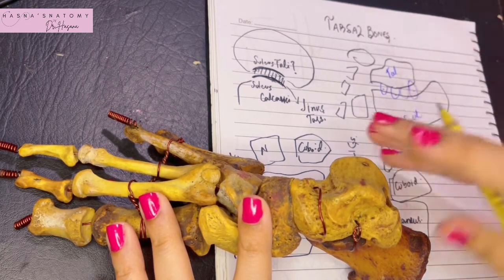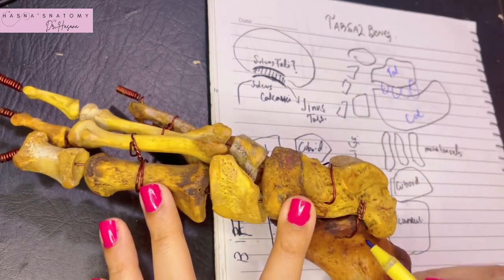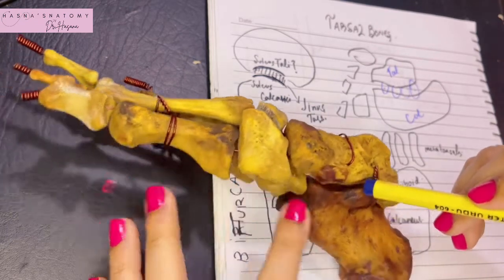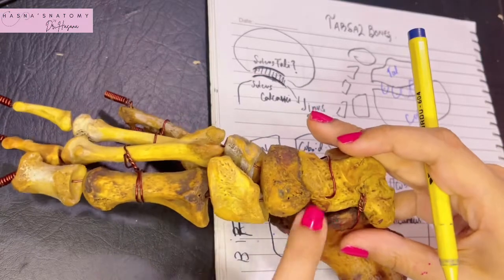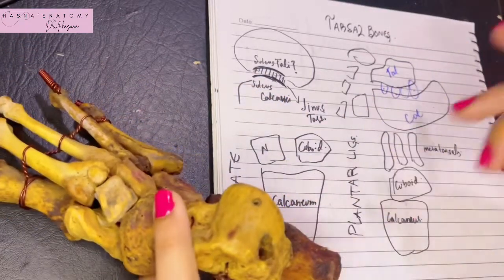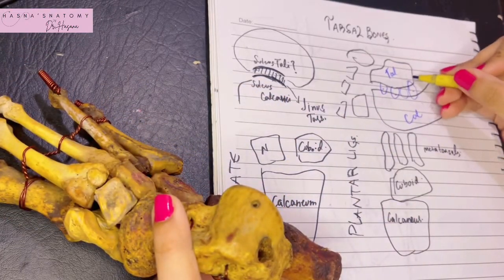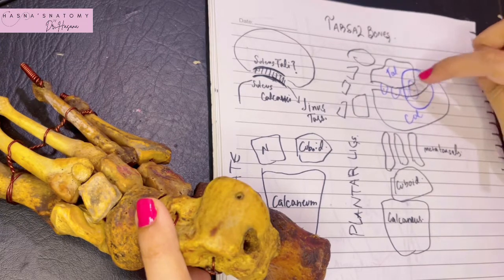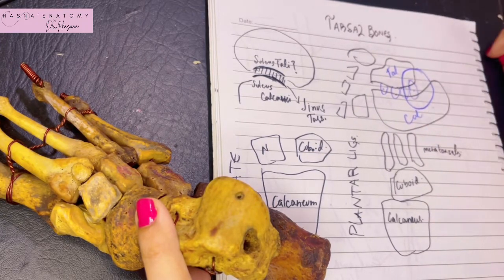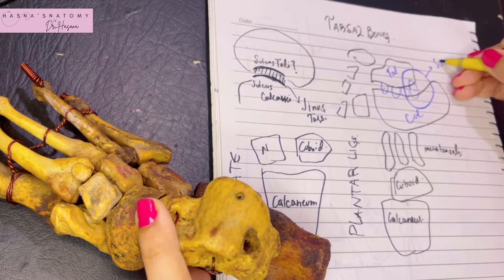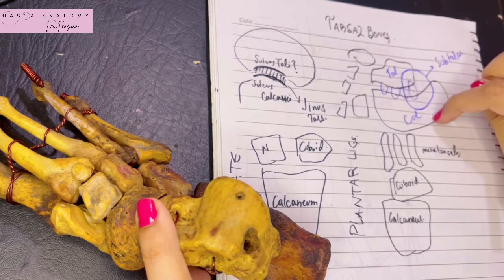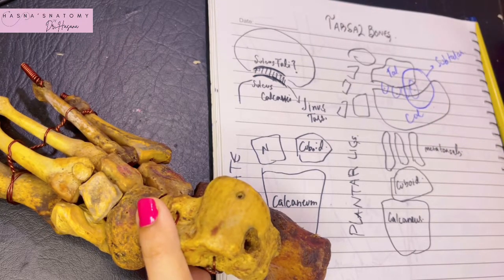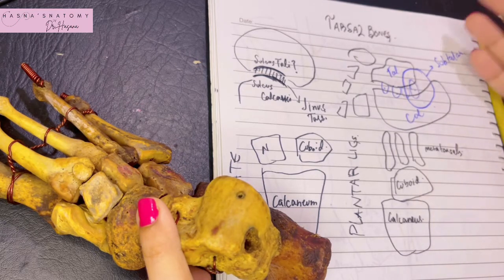Over here I can show you — this is the posterior talo-calcanean joint, this is the sinus tarsi, and then these are the anterior and medial joints between the talus and calcaneum bone. So the subtalar joint is basically this most posterior joint between the talus and calcaneum bone. The most posterior talo-calcanean joint is known as the subtalar joint, and it is a plane synovial joint.